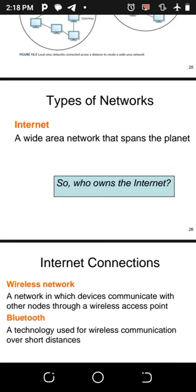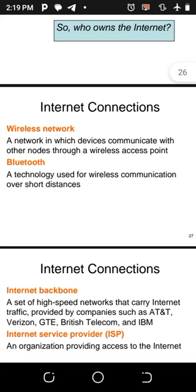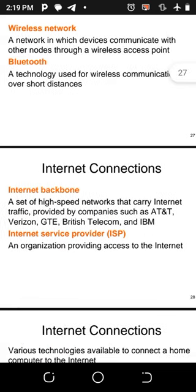The internet is a wide area network that spans the planet. A billion dollar question: who owns the internet? Leave your answer in the comment box and subscribe to the YouTube channel. For internet connectivity, a wireless network is one in which devices communicate through a wireless access point. Bluetooth is also a wireless technology used for communication over a short distance.